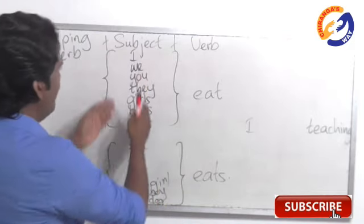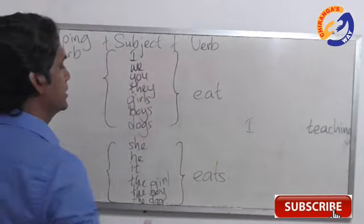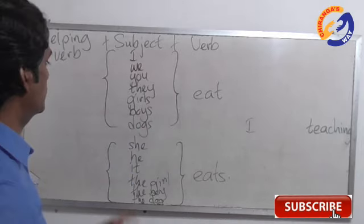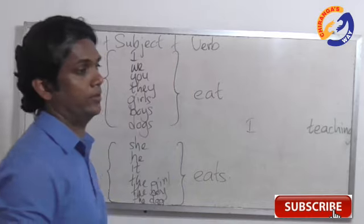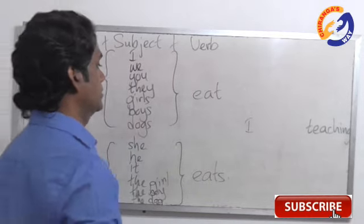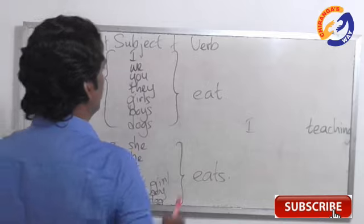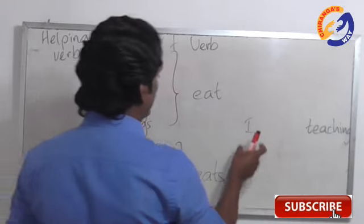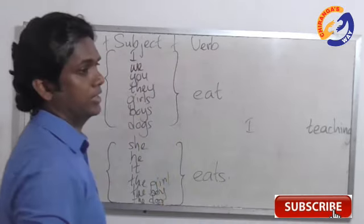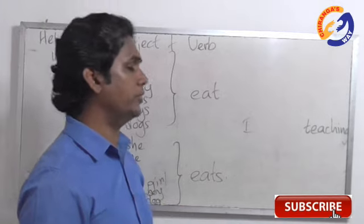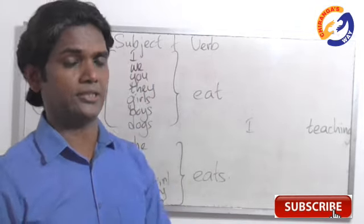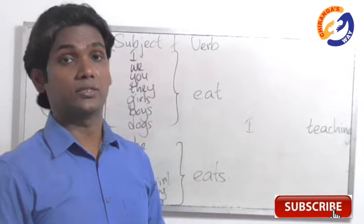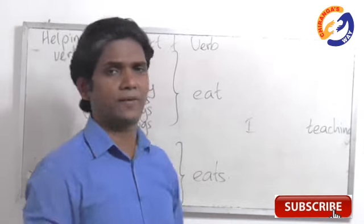Now we have a subject, we have a verb. To come to this, we are going to take some examples to understand what we need. Subject is essential, verb is essential. I'm teaching, I'm asking you, subject is there, verb is there. Is there a tense in this? There is not a tense. I'm teaching, there is not a tense in this.